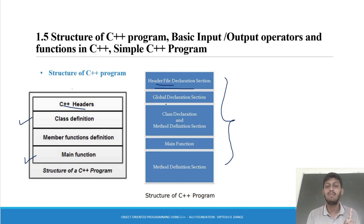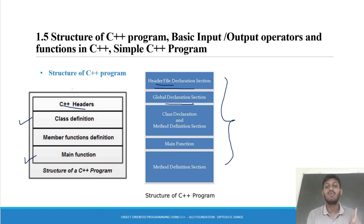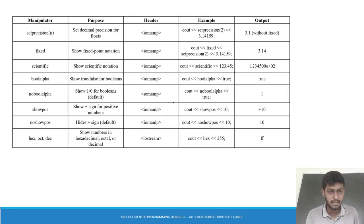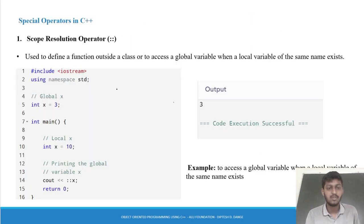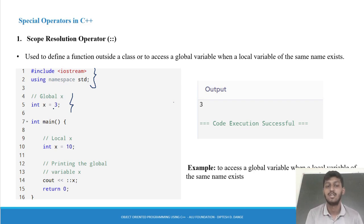After the header files comes the global declaration section. As we saw in the previous video, global variables are declared outside the main function. So whatever we declare outside the main function goes into the global declaration section. Whatever you declare here can be accessed throughout the entire program. So this is your global declaration section and this is your header section.